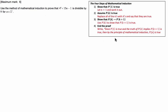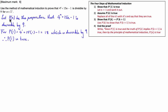We first start with outlining what our proposition is going to be, and then we show that the proposition at 1 is true. I've defined what my proposition P(n) is, related it to the function 4 to the power of n plus 15n minus 1, and stated that it has to be divisible by 9. The proposition at 1 is equal to 4 to the power of 1 plus 15 take 1, which equals 18, which is divisible by 9. Therefore the proposition at 1 is true.